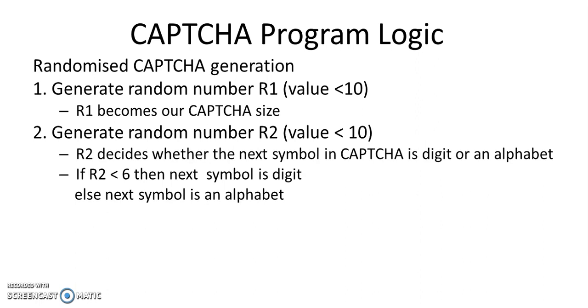Then we generate random number R2, again with value less than 10. This R2 decides whether the next symbol in CAPTCHA is a digit or an alphabet. If R2 is less than 6, we append the next symbol as a digit. Else if it is more than 6, we append an alphabet.